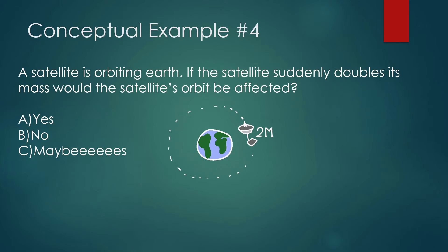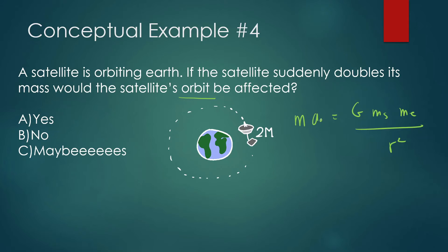Looking at the equation — force of gravity equals G times mass of satellite times mass of Earth divided by R² — we might think that if the satellite doubles its mass, the force of gravity increases by a factor of 2. That's true, but we're not looking for the force of gravity; we're looking at how the satellite's orbit would be affected. If we rewrite the force as mass of satellite times acceleration of gravity, doubling the satellite's mass just cancels out. The acceleration stays the same, the velocity stays the same, and the period stays the same.